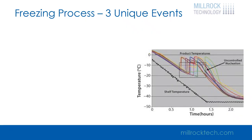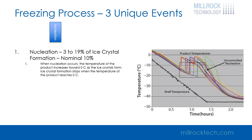The freezing process occurs in three unique events. The first event is called nucleation, where an ice crystal forms and the available water starts to form ice crystals. Up to somewhere between 3 and 19% of the available water will crystallize, but nominally about 10% of the water will actually form ice crystals during this process.